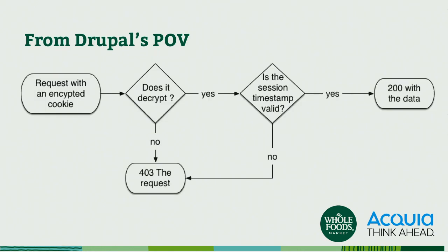From Drupal's point of view, what happens here is it gets a request with this encrypted cookie. It first says: does it decrypt? If it doesn't, we just 403 the request — you are not authenticated, you do not pass go, you do not collect $200. If it does decrypt properly, then we say — we put a timestamp in that cookie as well. Typically with a session, a session has a duration, so we're able to encode that along with the rest of that encrypted information. We say: is the timestamp valid? If it's not, the request is not valid. If it is, then you are now authenticated. We know who you are, you do have a valid session and you can move along.